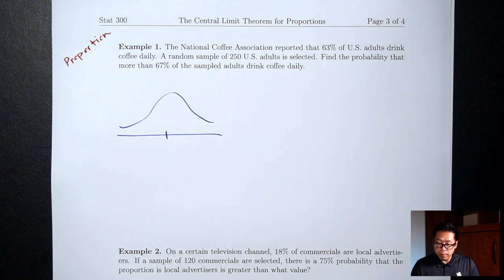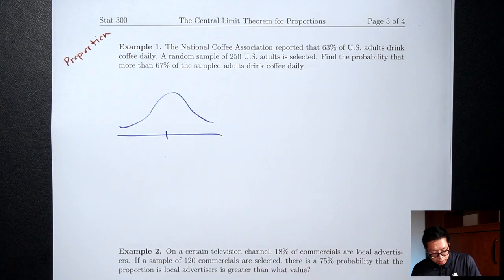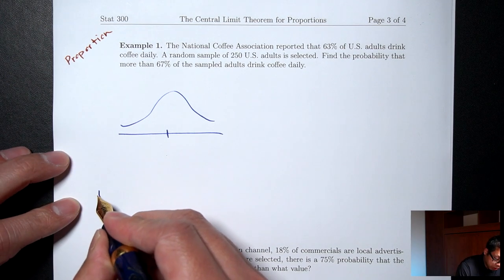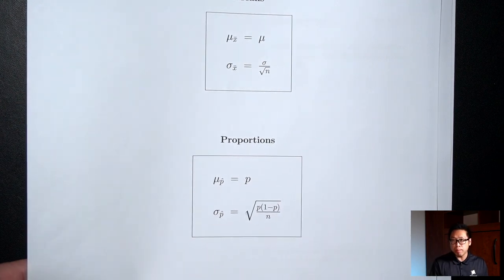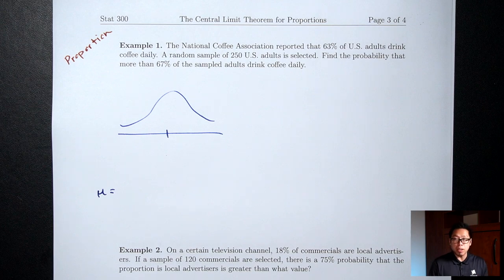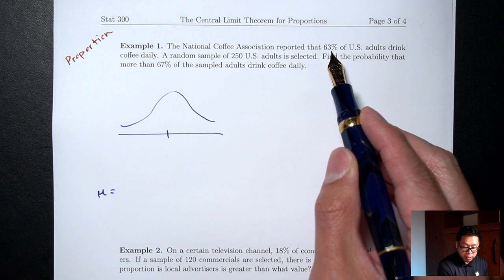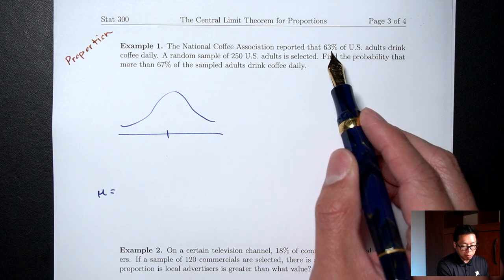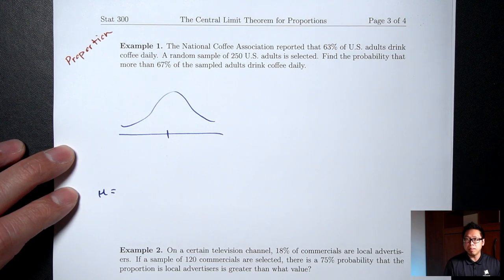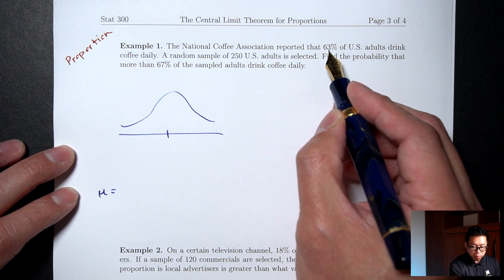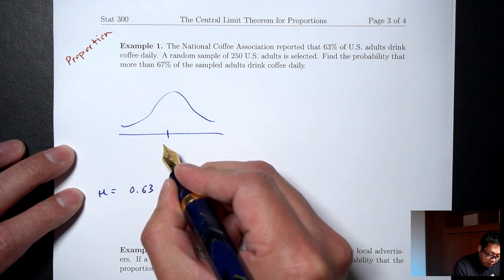Because it's a proportion question, the proportion box tells us what to use for the mean and standard deviation. The mean we use is p, the population proportion — in this case, 63%, which as a decimal is 0.63. So we put 0.63 in the middle of our normal distribution.